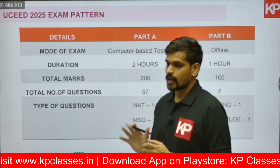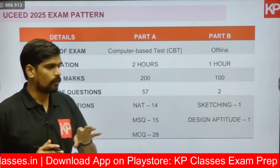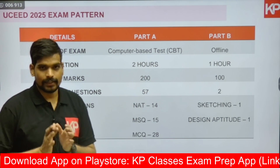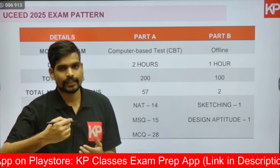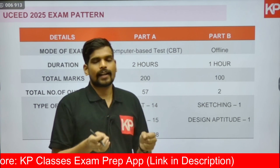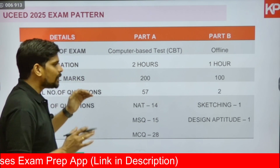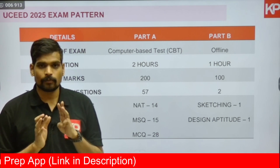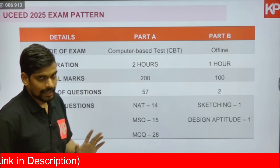The overall UCEED examination is three hours long. Part A, the computer-based test, is for two hours (120 minutes), and Part B, the offline sketching test, is for 60 minutes. Both Part A and Part B are conducted on the same day at the same exam center.